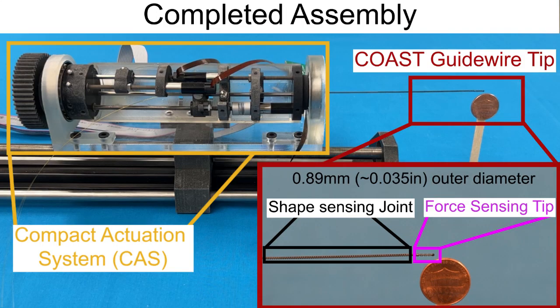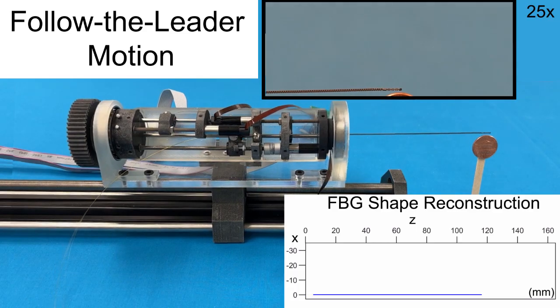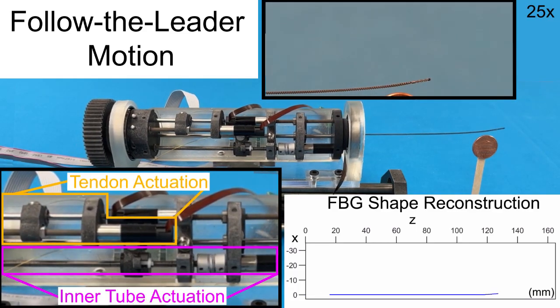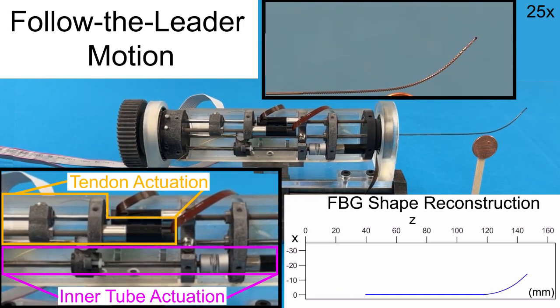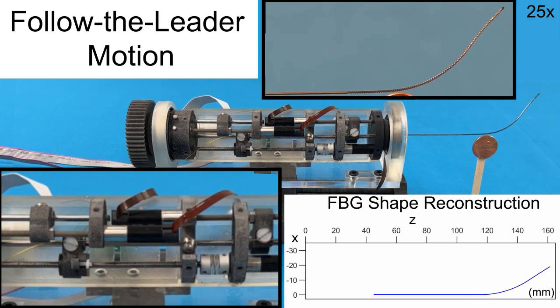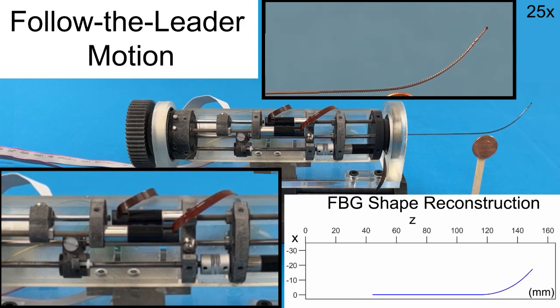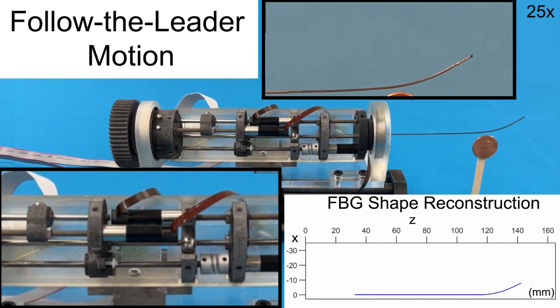The relative distances between the inner, middle, and outer tubes are controlled using the compact actuation system. This facilitates follow-the-leader motion by retracting the inner tube relative to the middle tube while the tendon is actuated to bend the joint. The outer tube can then be extended to lodge in the vessel. The process can be reversed to retract the guidewire along the path.